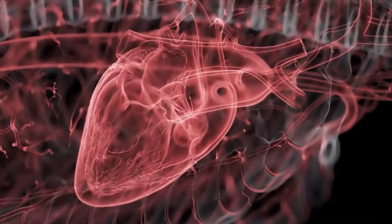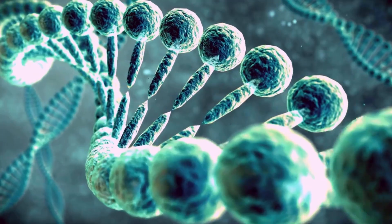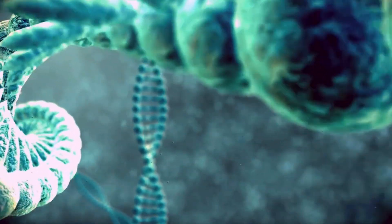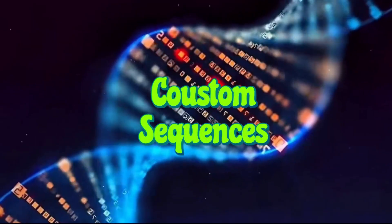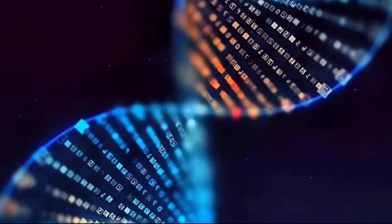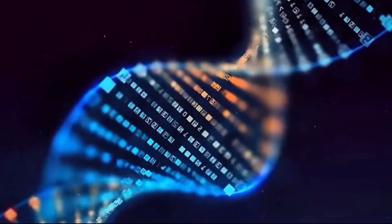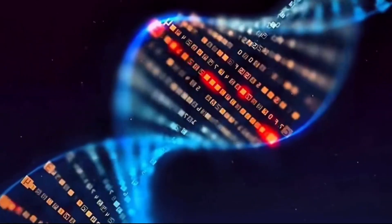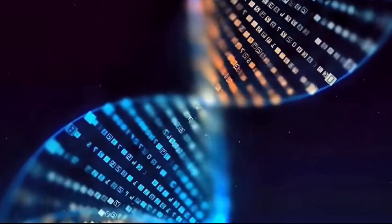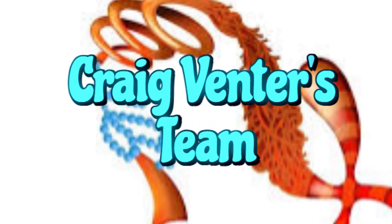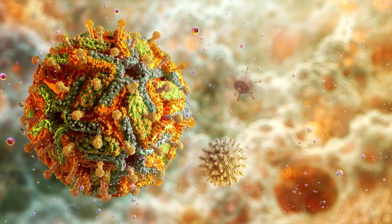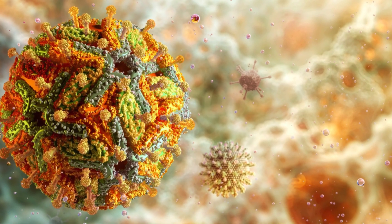But how do we even begin to build life from scratch? It starts with DNA. Scientists are now capable of synthesizing long strands of DNA with custom sequences. This synthetic DNA can then be introduced into a living cell, essentially reprogramming it. A landmark achievement in this field was the creation of the first synthetic bacterial genome by Craig Venter's team. They built an entire bacterial chromosome from scratch and then transplanted it into a cell, effectively creating a synthetic cell capable of replicating.